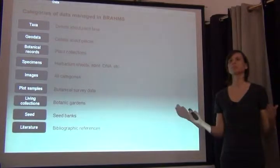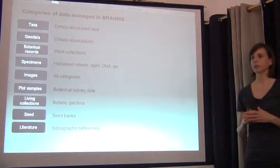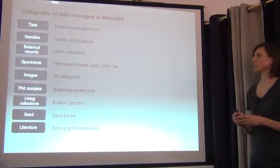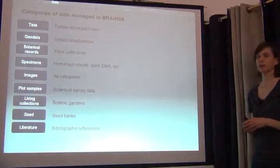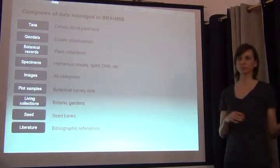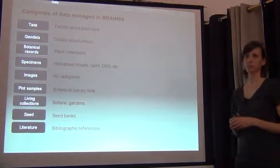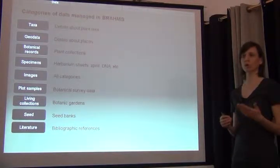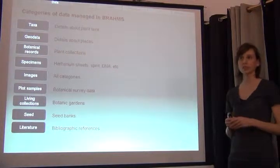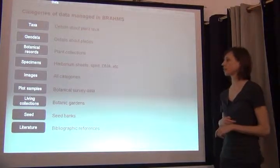Brahms is made up of a series of modules to handle each one of these data types. Primarily the backbone is taxa — you can import datasets to store scientific names. Then there are modules for geographic data, botanical records, plant collections, specimens of all types from herbarium sheets to DNA samples, images for any of these categories, plot samples for survey data, living collections for botanical gardens and universities, and seed banks along with a bibliographic dataset for literature.